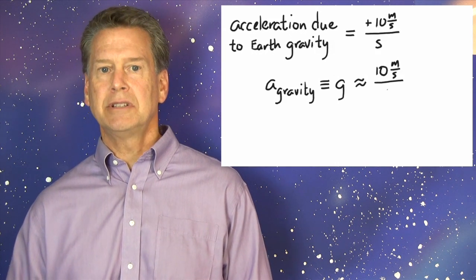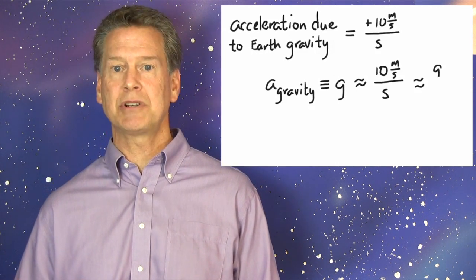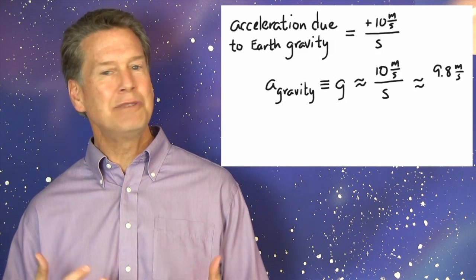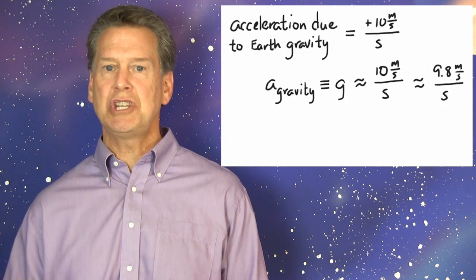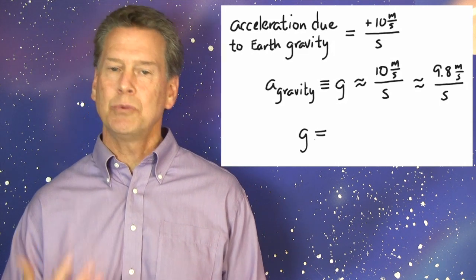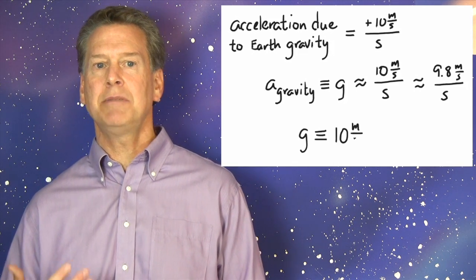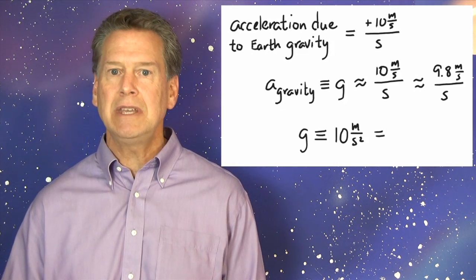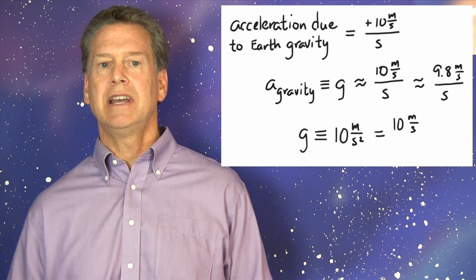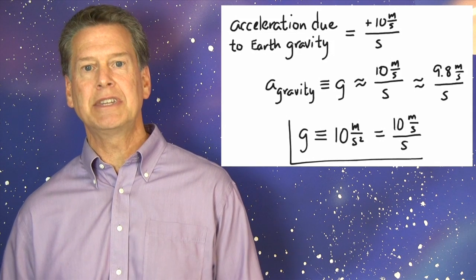For most places on Earth, little g's value is actually closer to 9.8 meters per second per second. However, 10 is such a nice round number, so very handy, that we will use g equals 10 meters per second per second, except when real precision is called for. Remember what little g equals 10 meters per second per second means. It says that objects falling near Earth's surface gain 10 meters per second of velocity every second that they fall.